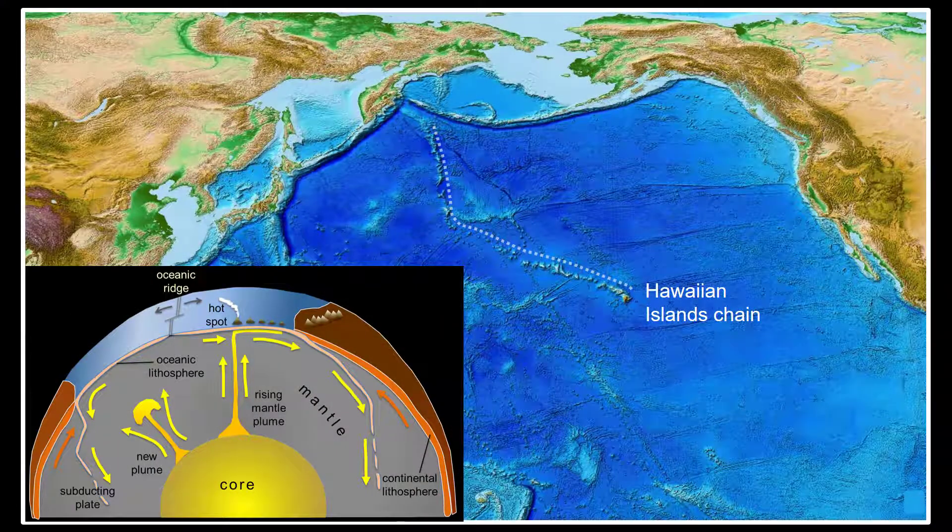A similar process occurs below hot spots like Hawaii, as mantle rocks rise in hot plumes that begin near the core mantle boundary. As they neared the surface, the hot mantle material in these plumes would undergo decompression melting to form mafic magma.